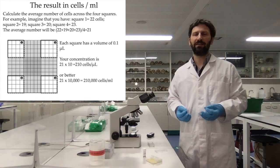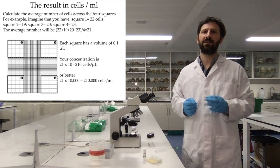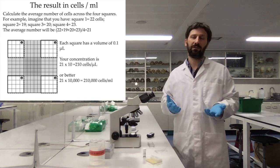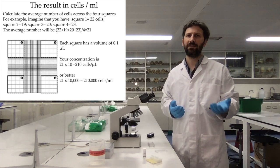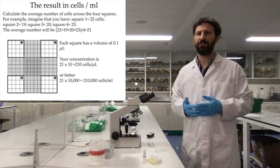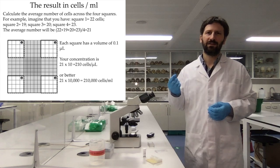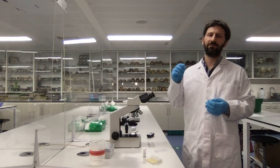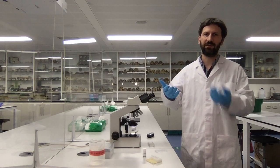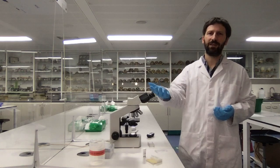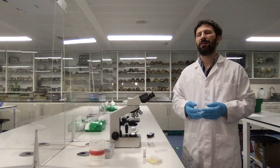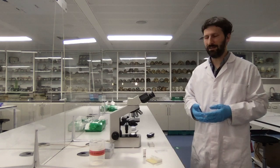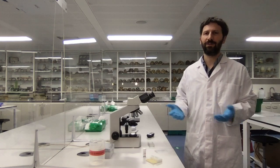Once I have all the numbers, I just need to remember that one square contains 0.1 microliters of suspension. Since we typically express cell density in cells per milliliter, 0.1 microliters is 10,000 times smaller than one milliliter — because multiplying 0.1 µL by 10 gives 1 µL, and then multiplying by 1,000 gives 1 mL. So there are effectively 10,000 squares per milliliter, and I simply apply that conversion to get my cell density.